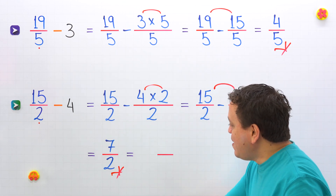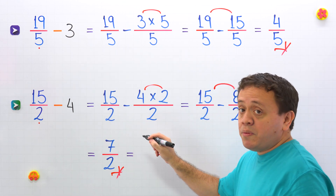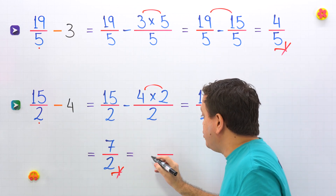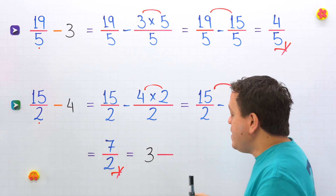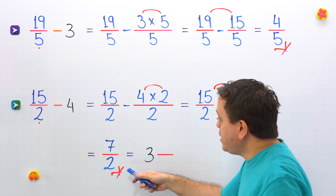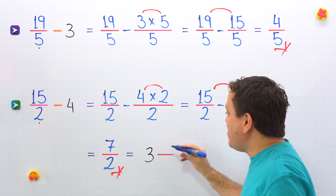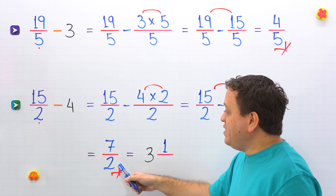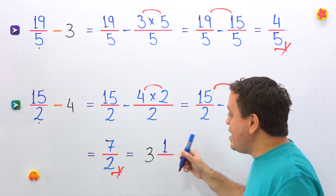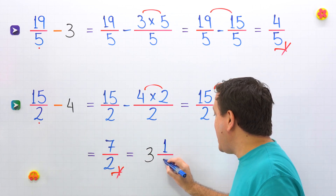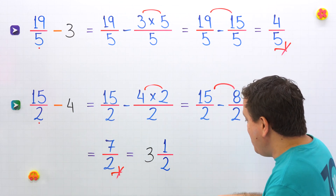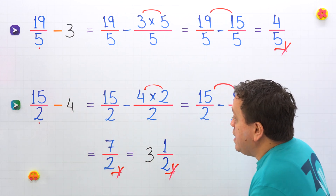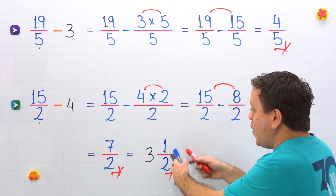Also, we can convert improper fractions to mixed numbers. How many times does 2 go into 7? Well, 2 goes into 7 three times. Then we multiply: 3 times 2 is 6. To get 7, we need to add 1. The denominator stays the same — 2. Therefore, 15 halves minus 4 gives us 7 halves, or 3 and 1 half.